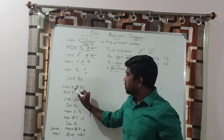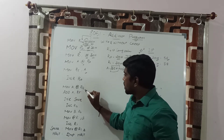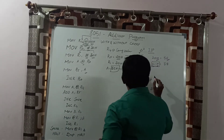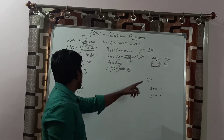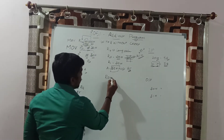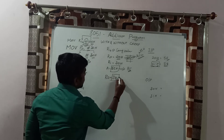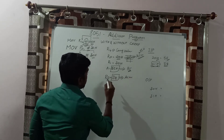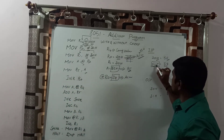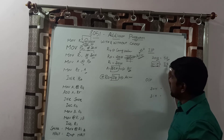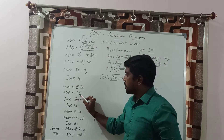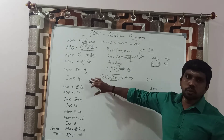The next instruction is MOV A, @R0. The R0 register holds the memory location 21H. At address location 21H, the data is D8H. This content is transferred to the accumulator. After execution, the accumulator content is D8H — this is the second data value loaded for the addition operation.